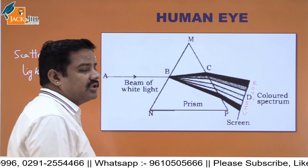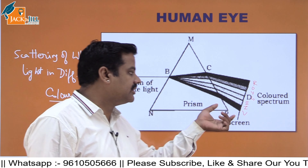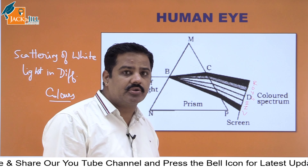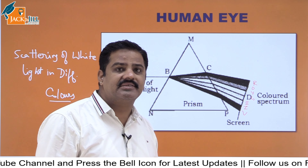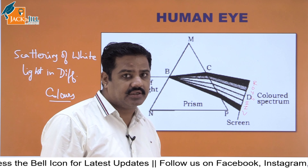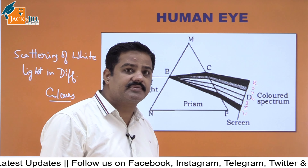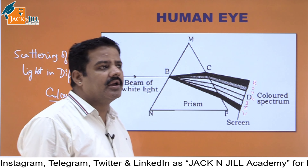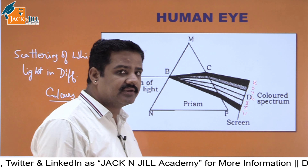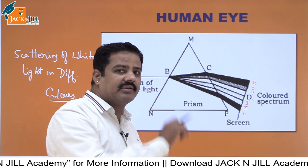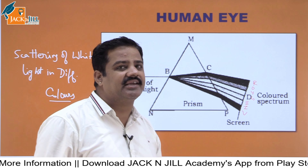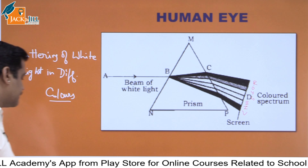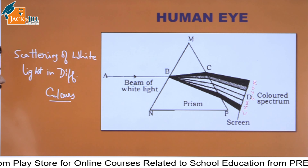We also discussed that in VIBGYOR, violet bends the most and red bends the least. That is why red has the longest wavelength and violet has the shortest wavelength. A wave's wavelength is the distance it travels in completing one full cycle. In higher classes, you will learn more about this.